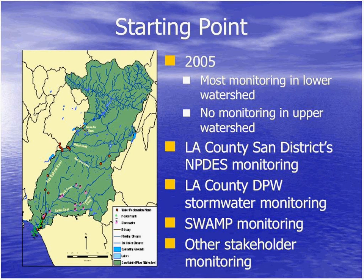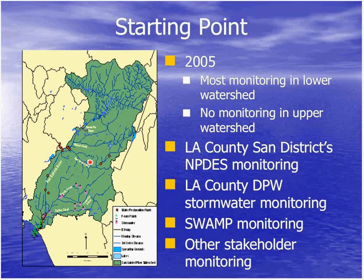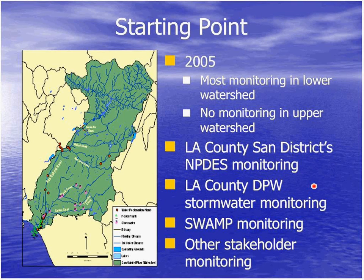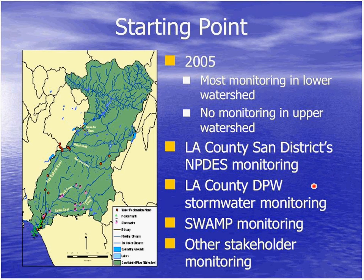Back in 2005, most monitoring was confined to the lower, heavily urbanized portion of the watershed, with a little bit in the middle and no monitoring in the upper watershed at all. Several programs were going on: LA County Sanitation District has five wastewater treatment plants discharging into the San Gabriel system; LA County Department of Public Works has required monitoring through their MS4 stormwater permit; and SWAMP was starting monitoring in 2005. We decided it would be useful to bring people together and coordinate these efforts to be more efficient and effective.